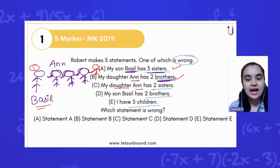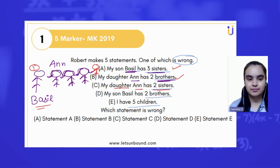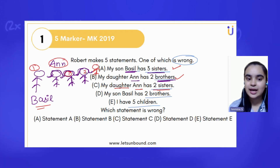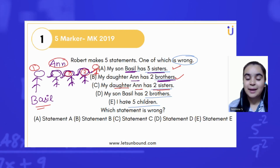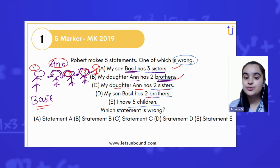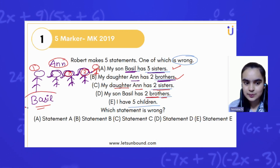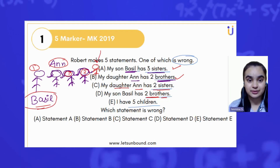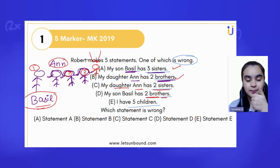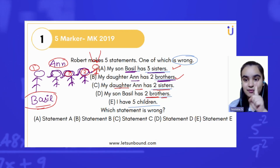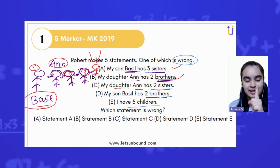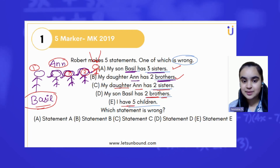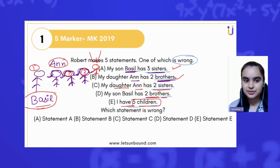My daughter Anne has two sisters. So here is Anne and she is having two sisters, sister number one and sister number two. My son Basil has two brothers. Now here is Basil — Basil should have only one brother, there is no other brother, because we have only one boy left and that can be his brother. And the last statement is: I have five children. That is true.